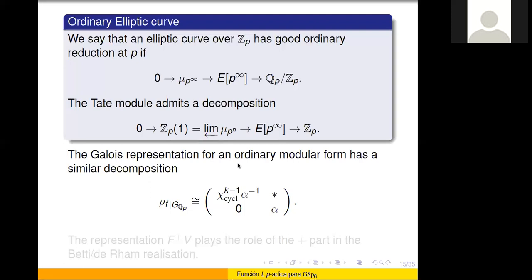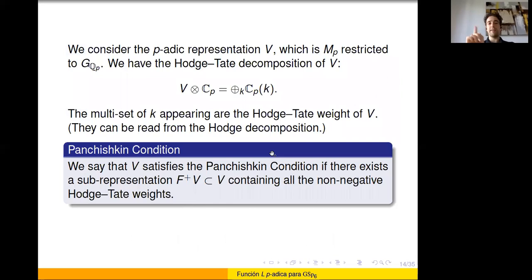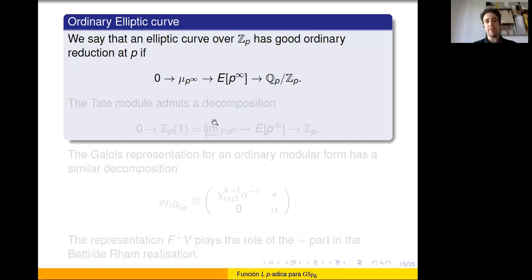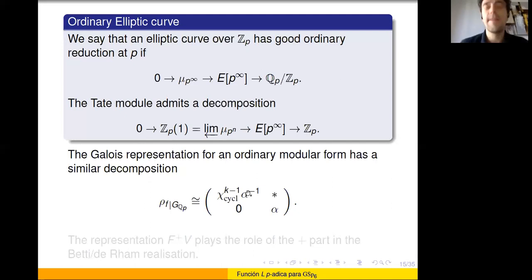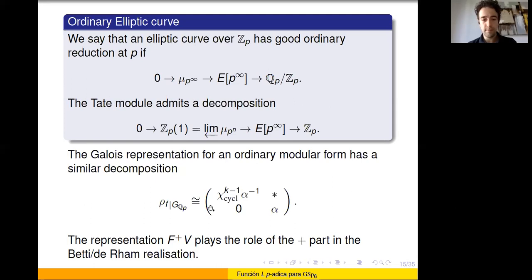For an ordinary modular form, the Galois representation decomposes with a sub-object where inertia acts as the (k-1)-th power of the cyclotomic character times an unramified character, and an unramified quotient. The Hodge-Tate weights are k minus 1 and 0. When considering integers j between 1 and k minus 1 (the critical range), k minus 1 minus j is non-negative and j minus (k-1) is negative. An important clarification: the vanishing condition is for a motive critical at zero — the L-function of an elliptic curve is not critical at zero, so we must twist by 1 to get Hodge-Tate weights 0 and minus 1.